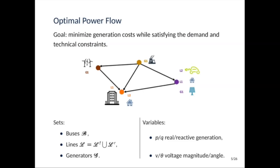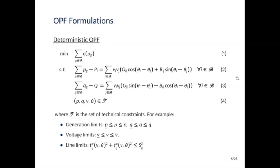Let's start by formulating optimal power flow. You have a network where you have some generators and some load. The goal is to minimize your generation costs while satisfying the demand and technical constraints. The usual sets you have are the set of buses, the set of lines, and the set of generators. And the variables we have are real and reactive power generation, and the voltage angle and magnitude.